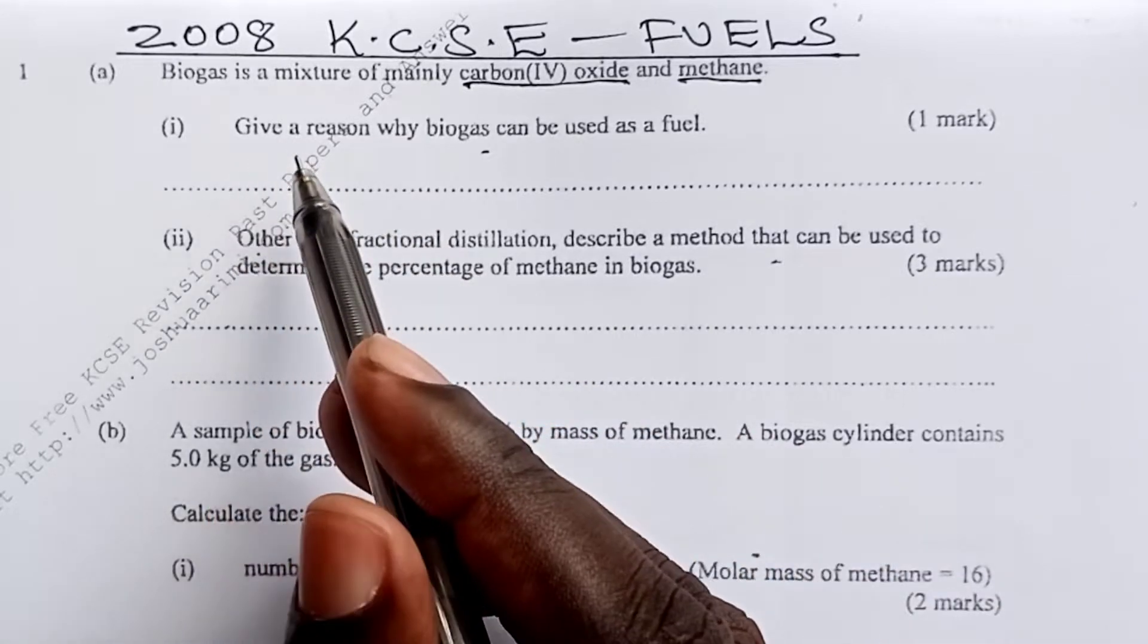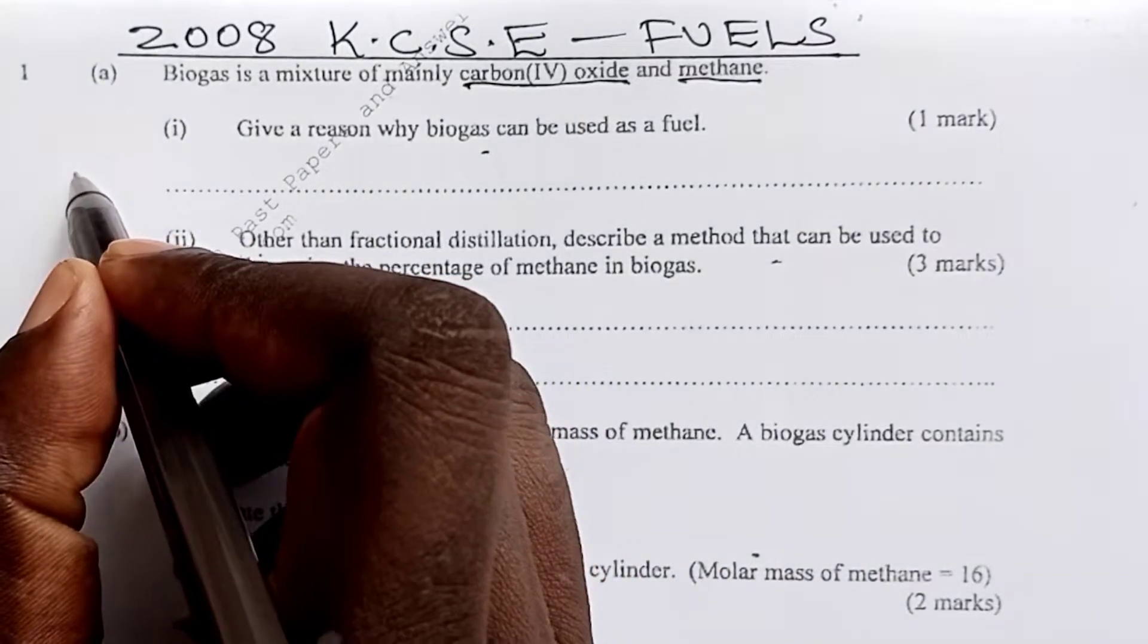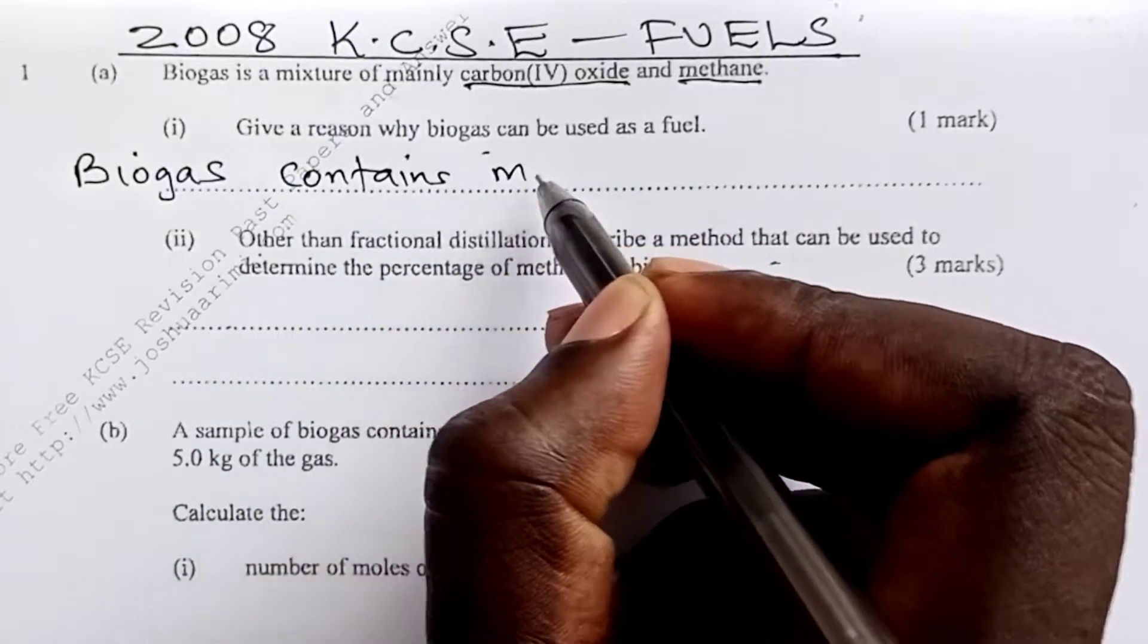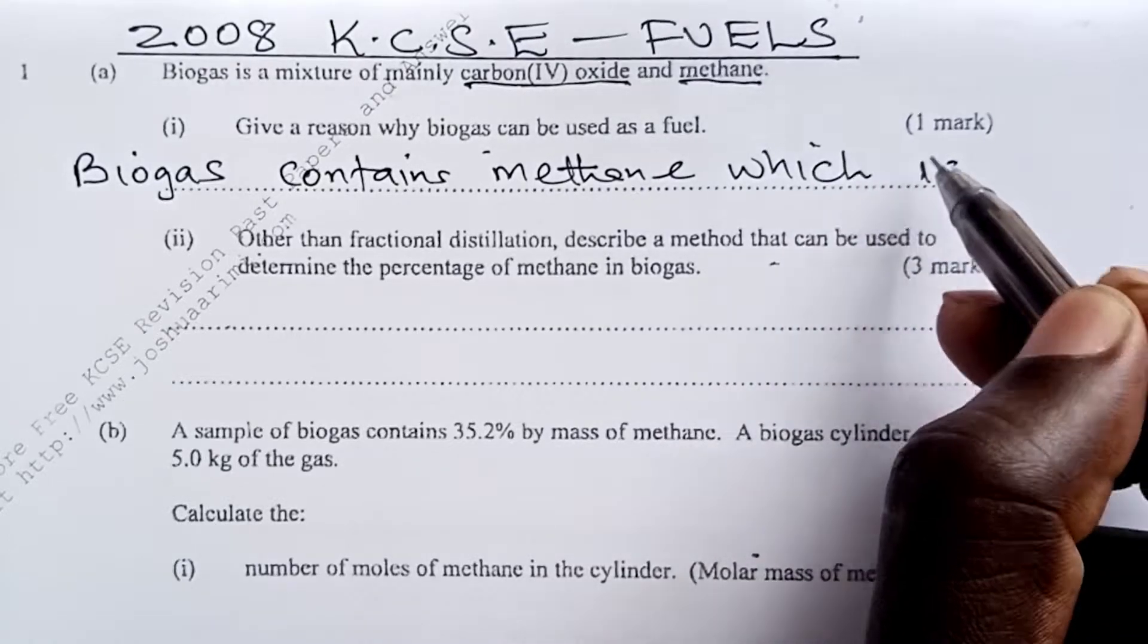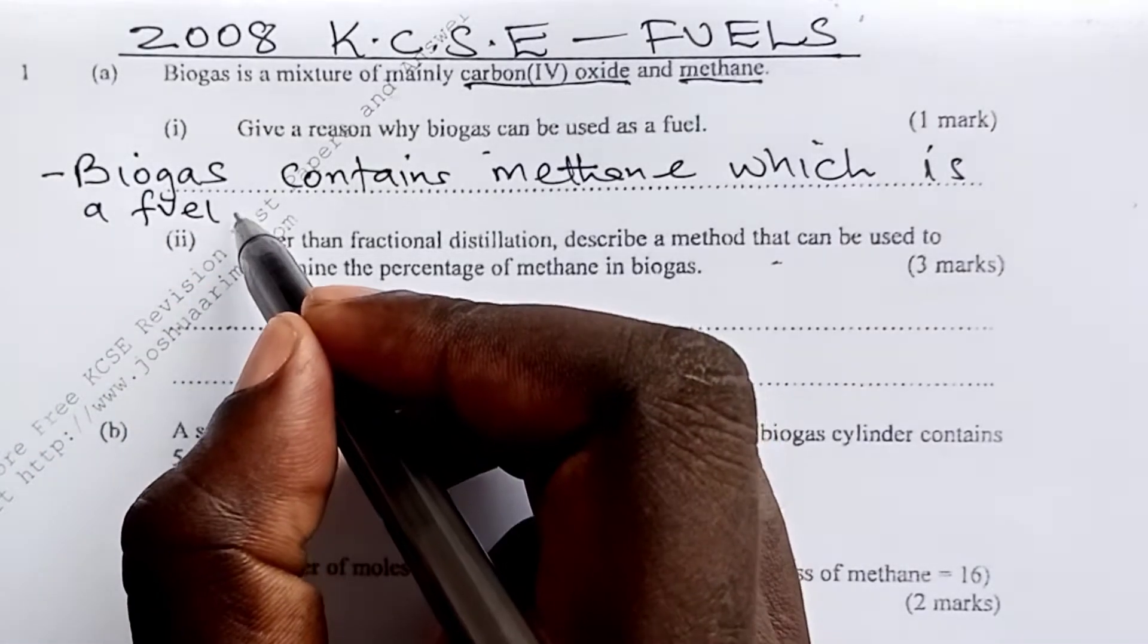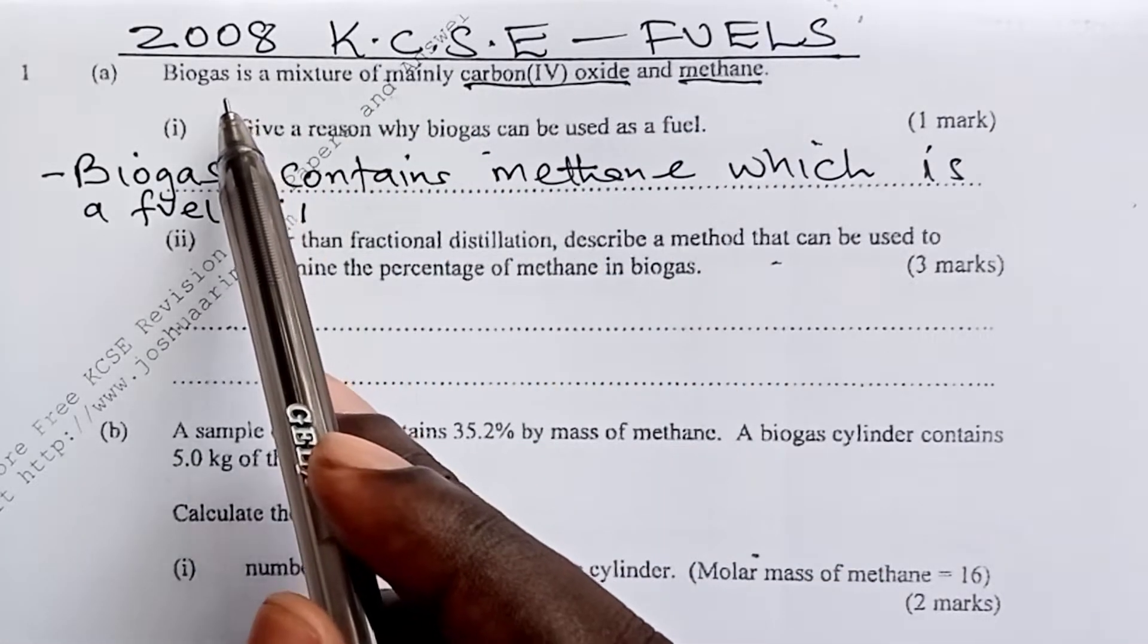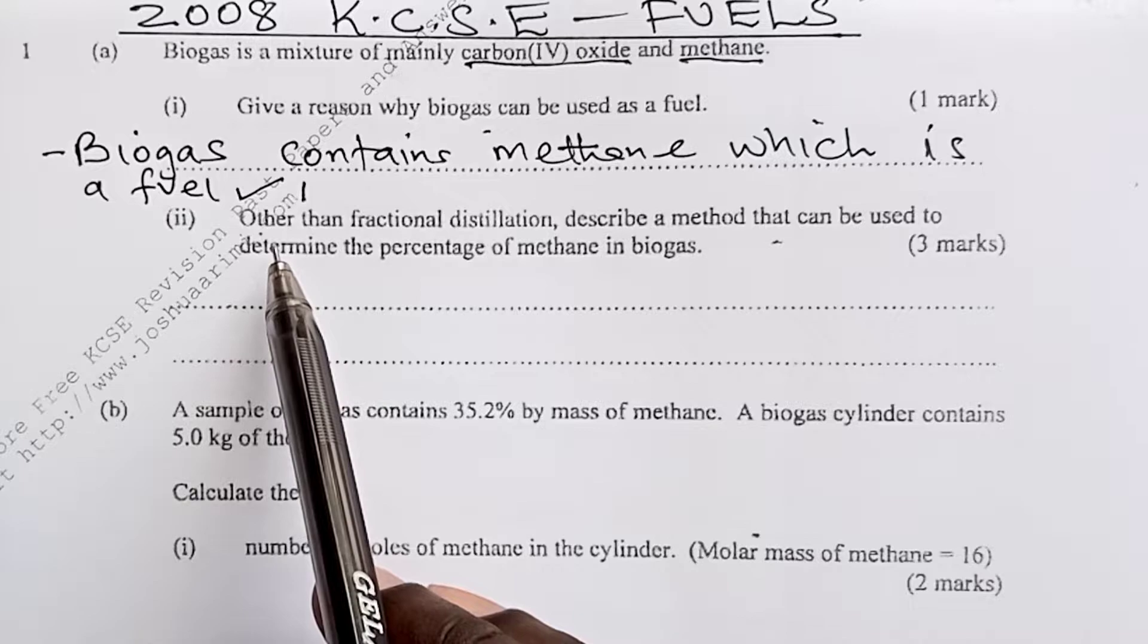The answer to this question depended on the components of biogas. A student was expected to state that biogas is used as fuel because biogas contains methane, which is a fuel. Well, that was the expected response to that question for one mark. And I think from the stem of the question, you were given some hint that actually methane is present in biogas.